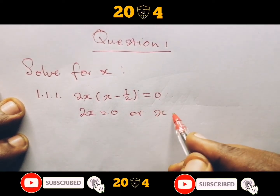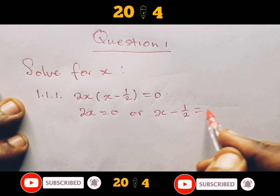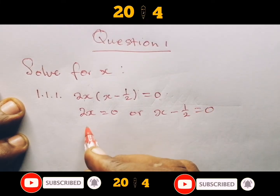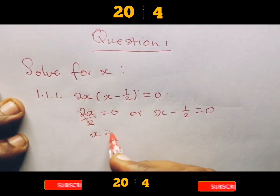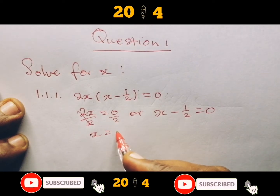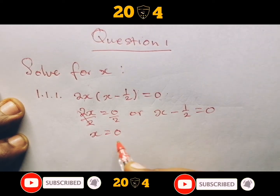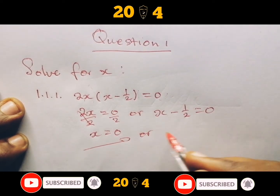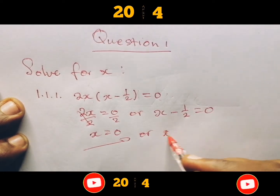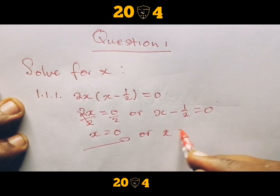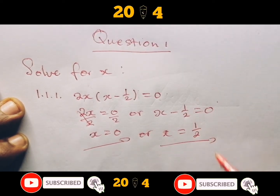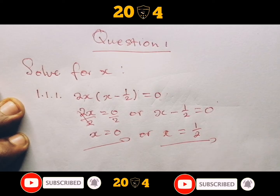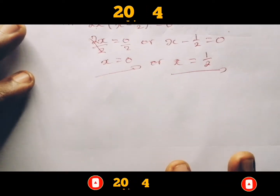You say X equals zero, and then you solve for the second X. You divide both sides by two, and you get X equals one over two. So your first X is zero and your second X is one over two.